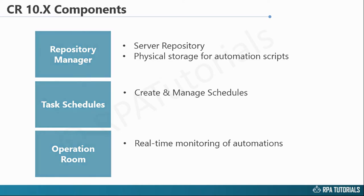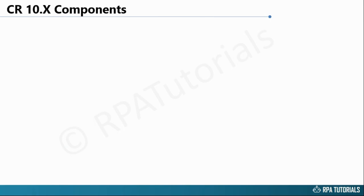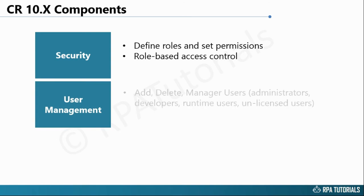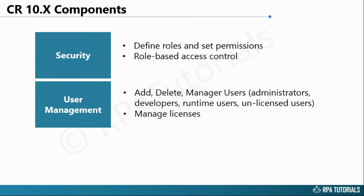One of the benefits of Control Room 10.x is the ability to control access based on user roles. Security helps you define various user roles and set their permissions so that they can access only relevant sections of the Control Room. User Management section helps you create users like developers, runtime users, and administrators by assigning them to the appropriate role defined in the Security section.